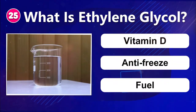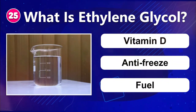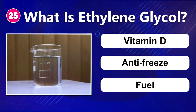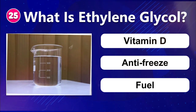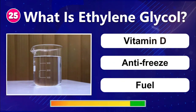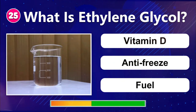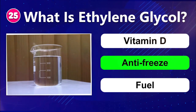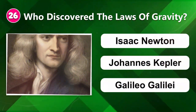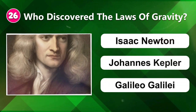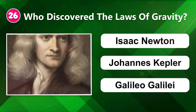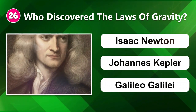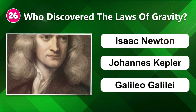Number twenty-five: What is ethylene glycol? Vitamin D, antifreeze, or fuel. Number twenty-six: Who discovered the laws of gravity? Isaac Newton, Johannes Kepler, or Galileo Galilei.